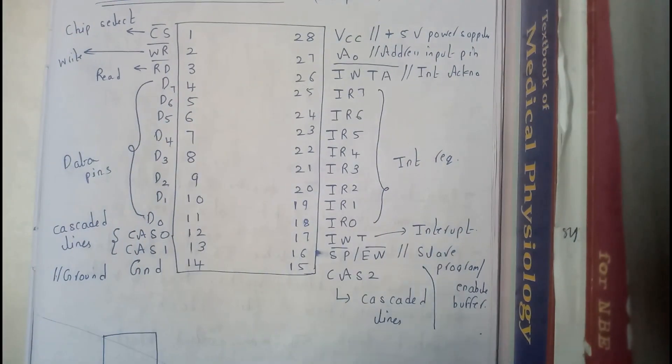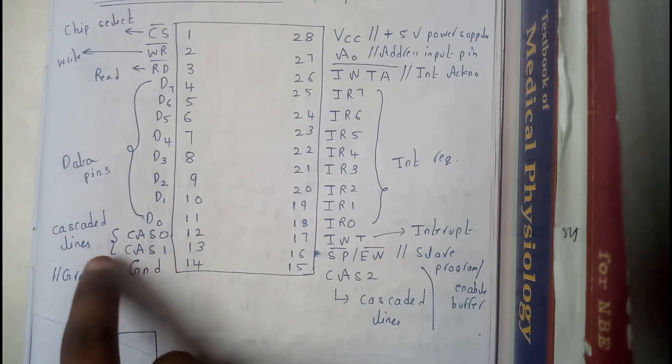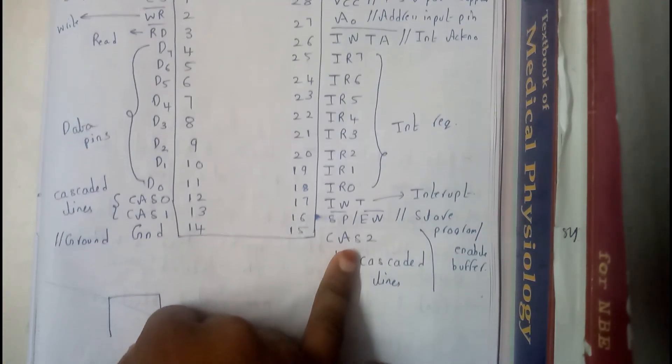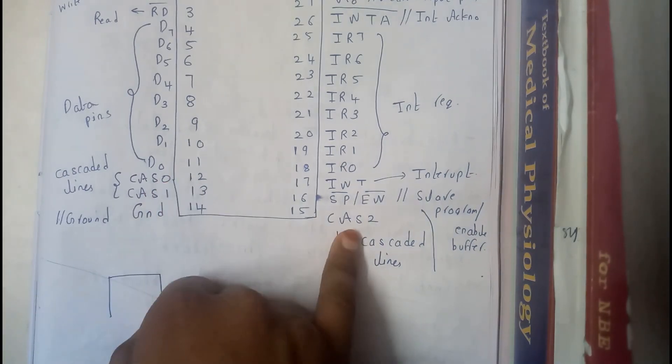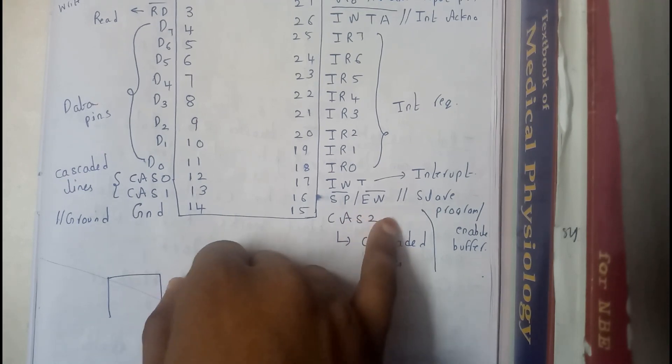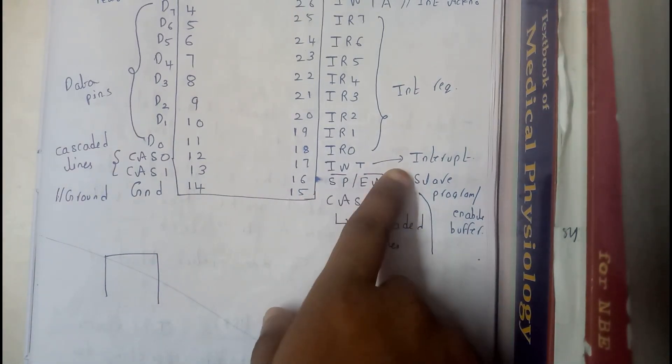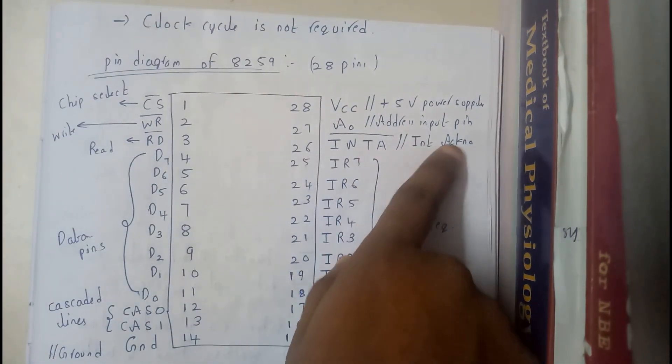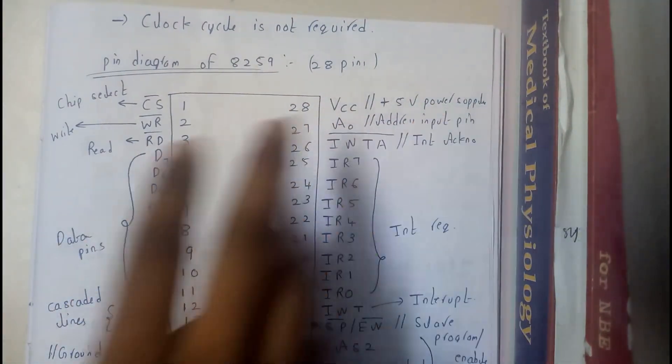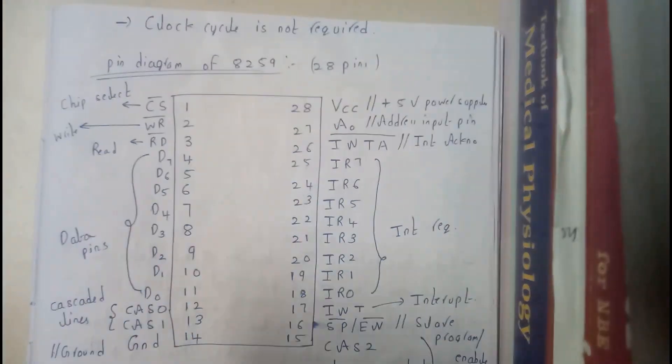At the end we will be having CAS 0 and CAS 1. Those are nothing but cascaded lines. Here at the bottom we will be having CAS 2, that is the third cascaded line. Above that we will be having SP bar or EN bar, that is nothing but slave program or enable buffer. INT is nothing but interrupt. INTA is nothing but interrupt acknowledgement. A0 is the single input address line or address pin. VCC is our power supply. These are all the pins that we are having in 8259A.